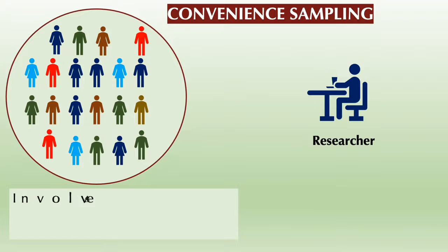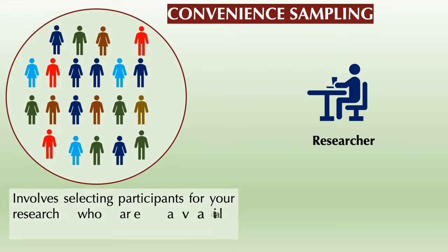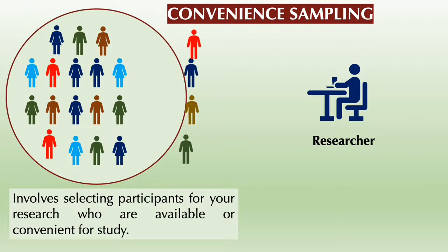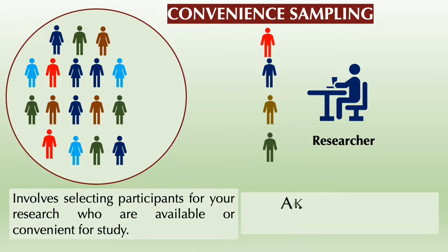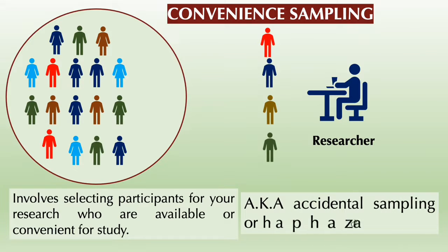First is convenience sampling. This type of sampling technique involves selecting participants for your research who are available or convenient for study. Samples are selected in a non-random fashion because not all people in the population have an equal chance of being selected. This is applicable if the researcher does not know the location of the participants — he or she simply recruits participants who are readily available during the time of interview. This is also known as accidental sampling or haphazard sampling, where the researcher collects data from those people to which he or she has the most convenient access.